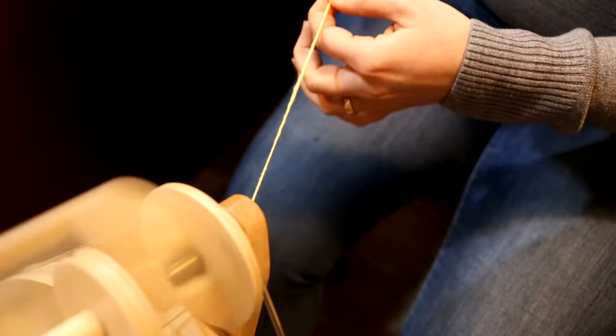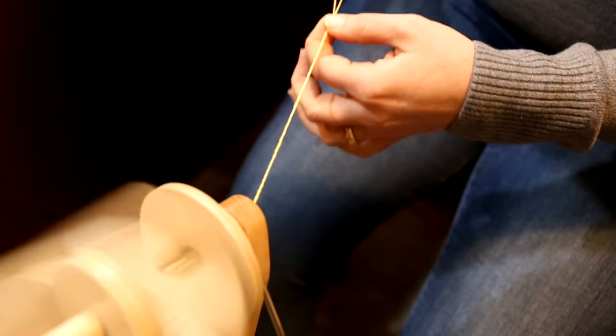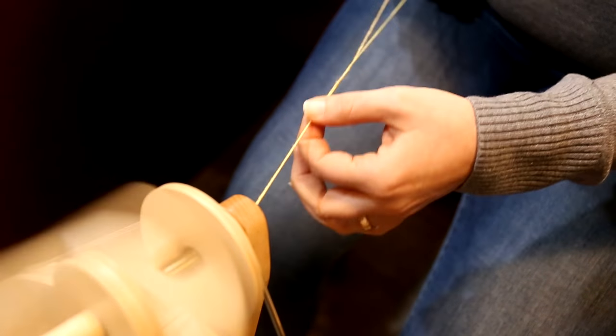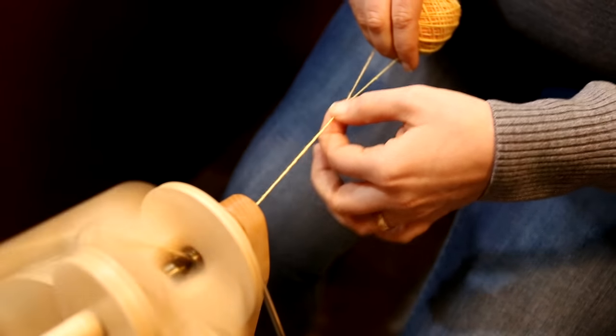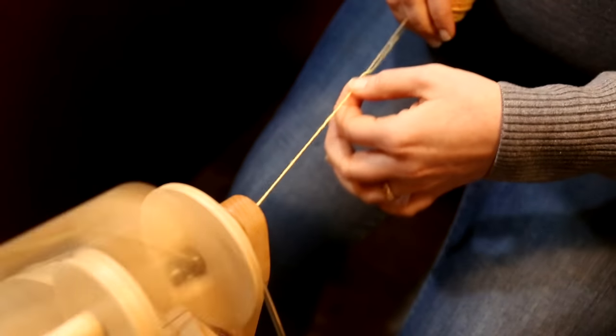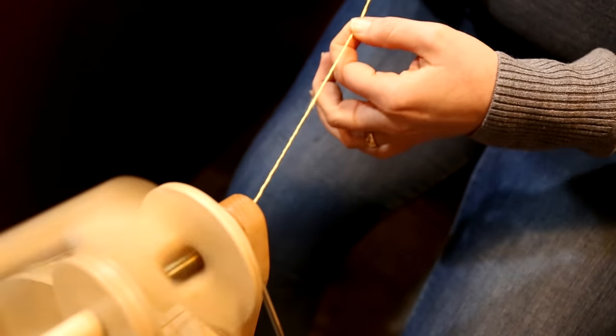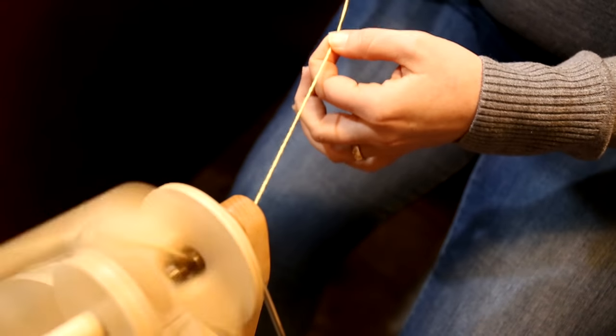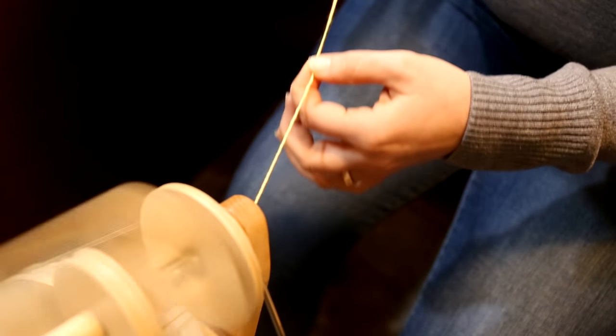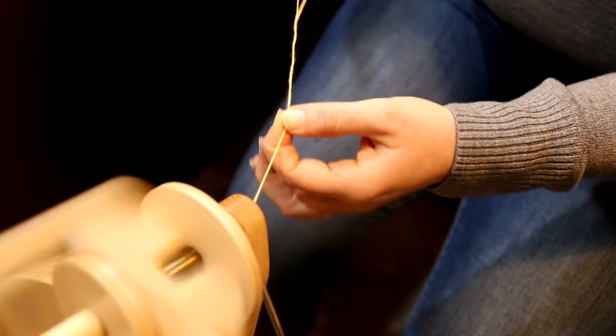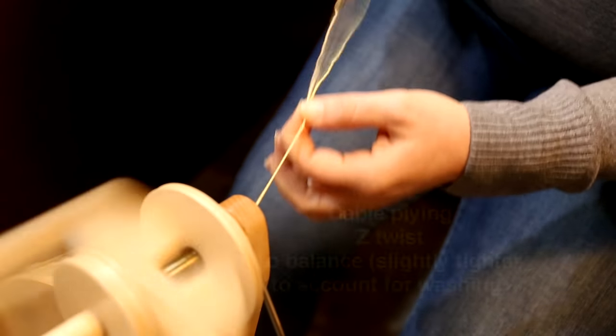The really interesting thing about cabled yarns is they're very hard wearing. There's very little of the actual yarn that is on the outside because it looks like a cable, and so they tend to wear really well. They tend to wear really nicely for socks and for areas of wear.